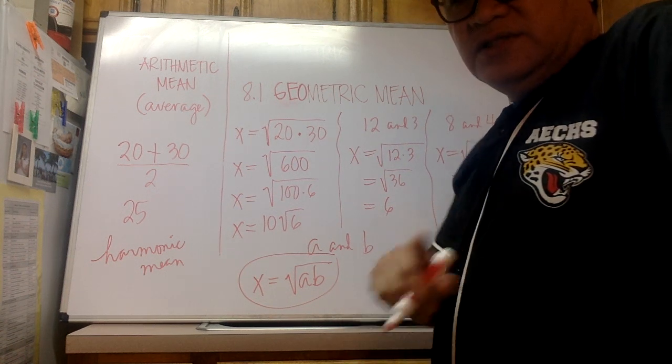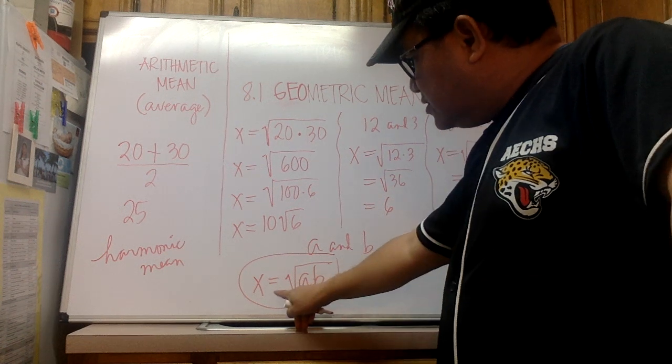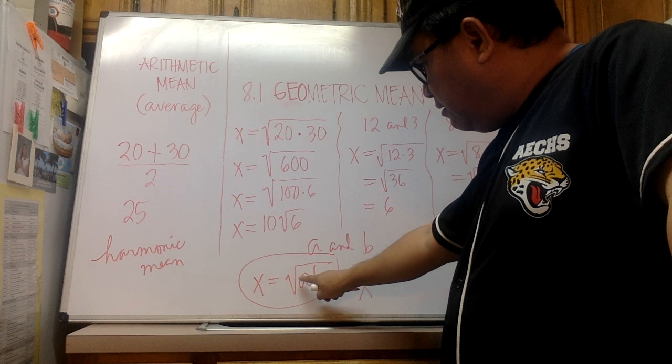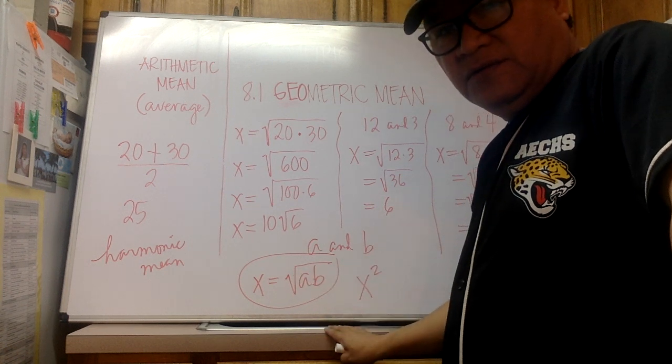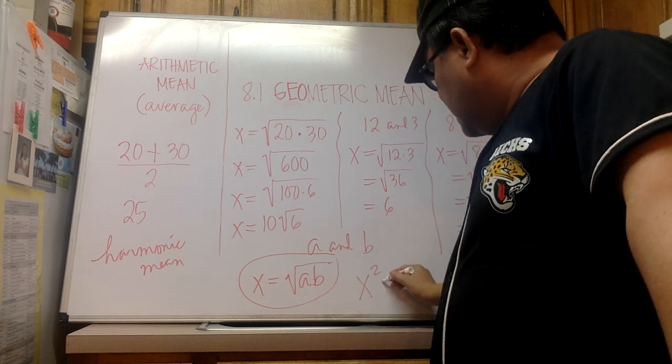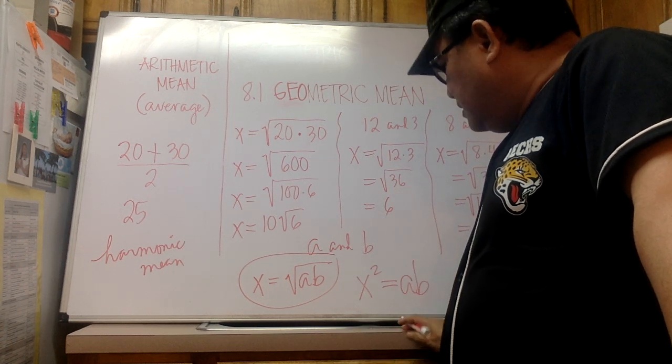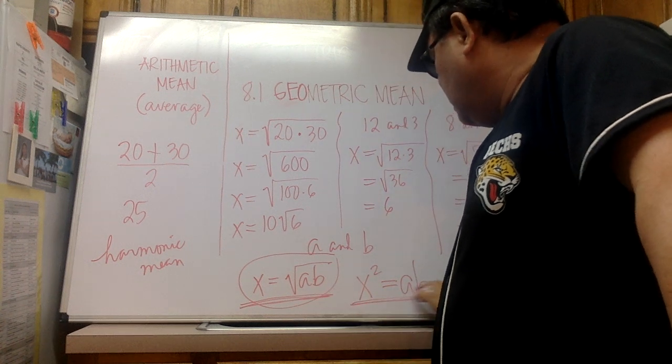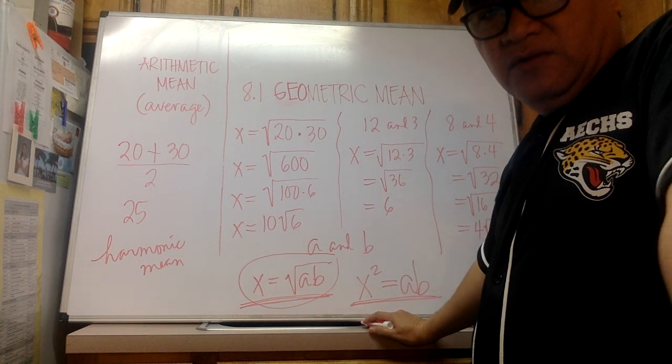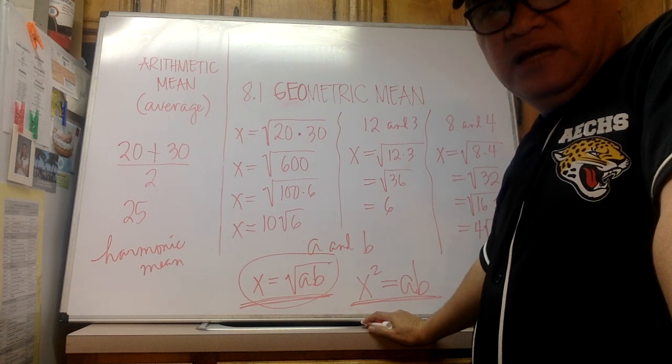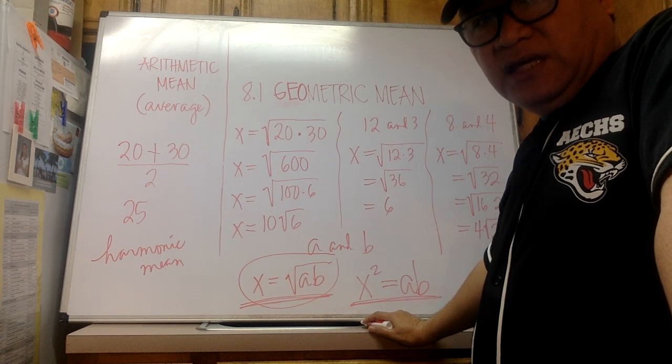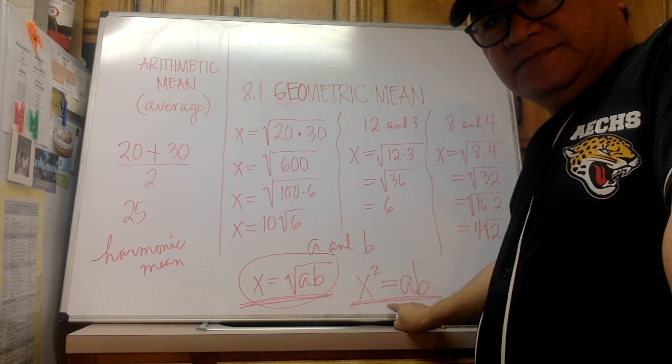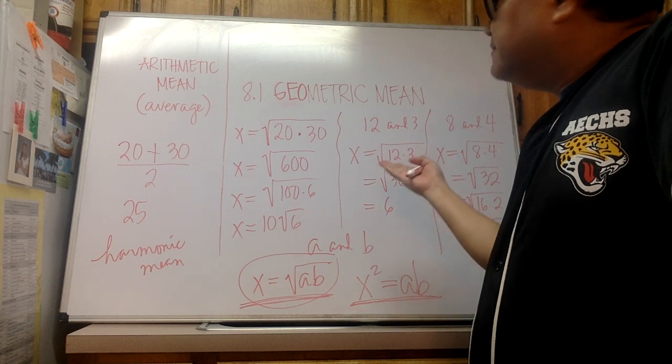But before I end this video, I'm just going to give you an idea. If you square the x, you will get x squared, right? And what do you think is gonna happen if I square this part that has a square root? We're going to eliminate the square root sign, and that would give us a times b. Ladies and gentlemen, this equation here and this formula over here are one and the same - they're equivalent. And if you remember the three formulas I gave you on Google Classroom last week, doesn't this one look familiar? Ladies and gentlemen, this is geometric mean.